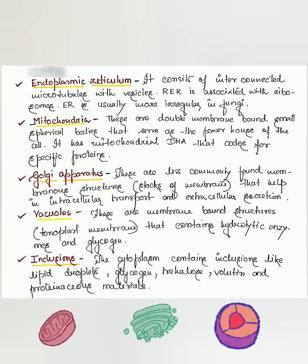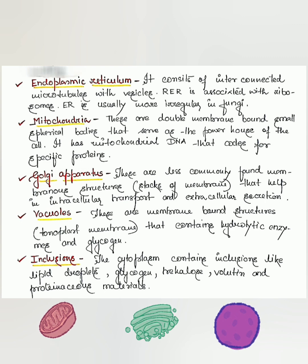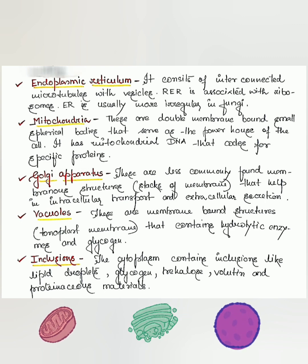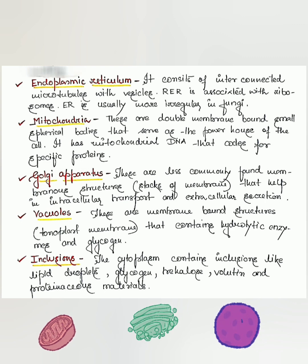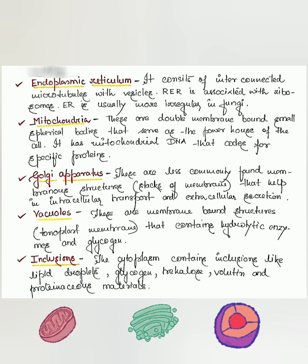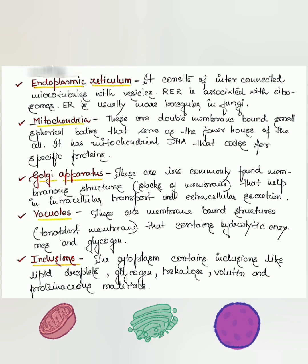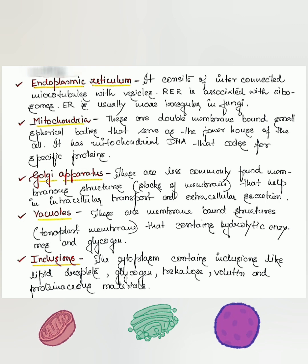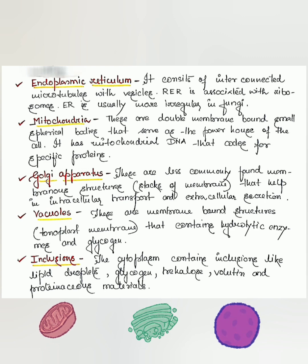Mitochondria are double-membrane-bound, small spherical bodies that serve as the powerhouse of the cell. They contain mitochondrial DNA that codes for specific proteins. The mitochondria have an outer and inner membrane; the inner membrane folds inward to form structures called cristae, which is very similar to other eukaryotic cells.